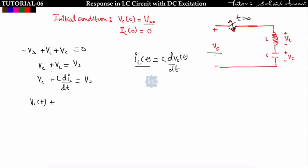We know that IL equals C times d(VC)/dt. Substituting, we get the second-order differential equation: LC times d²(VC)/dt² plus VC equals Vs. Now applying the Laplace transform to this equation.